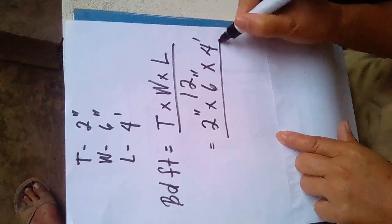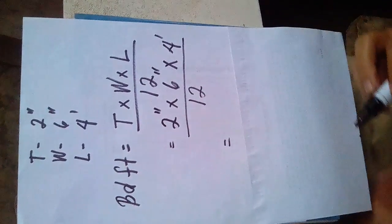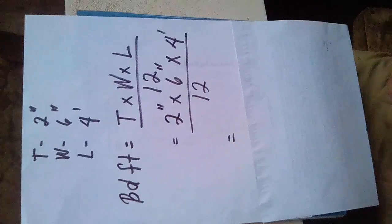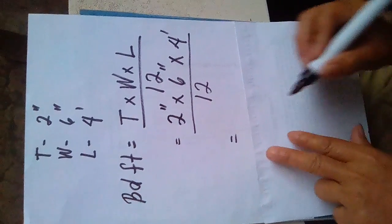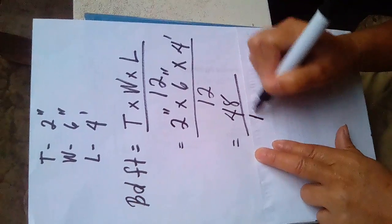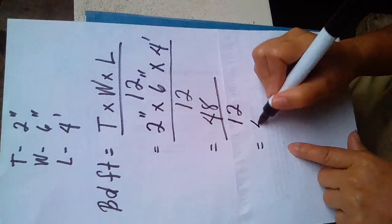2 times 6 times 4 equals 48 divided by 12, which equals 4 board feet.